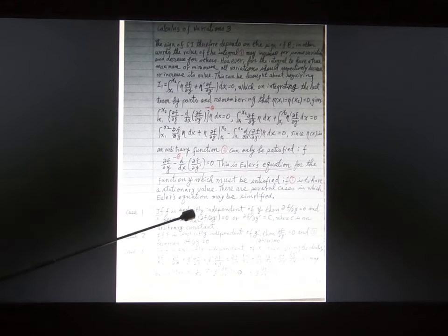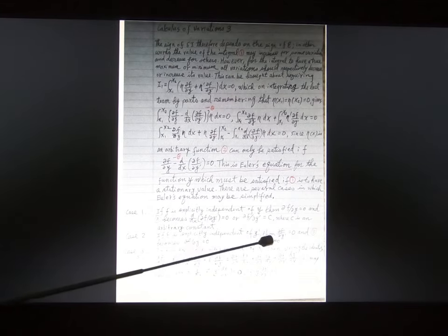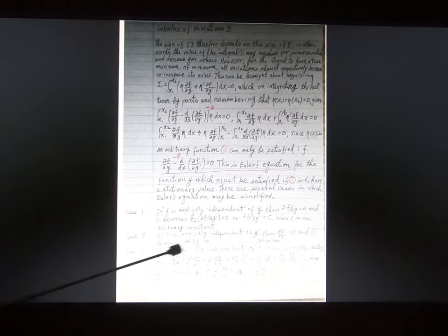So there are three other cases. Case one: if f is expressively independent of y, your equation becomes this one. Case two: if f is expressively independent of x, and this function actually is a variable of x, y, and y prime.